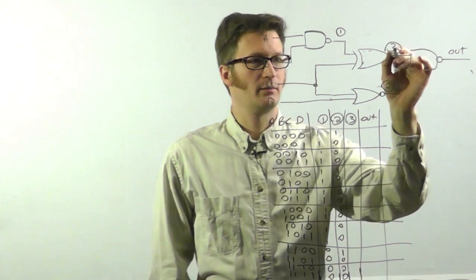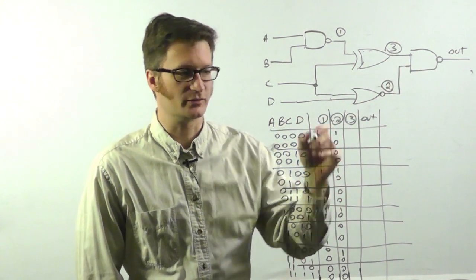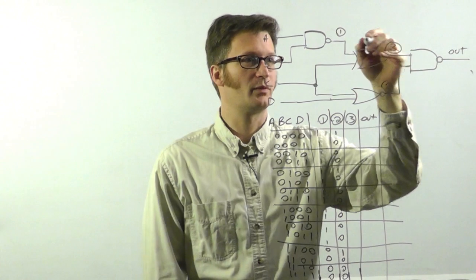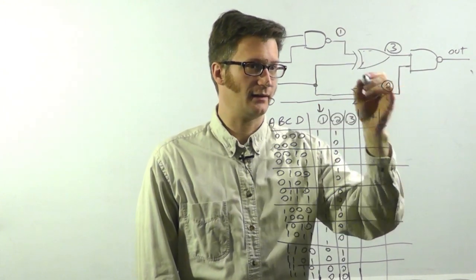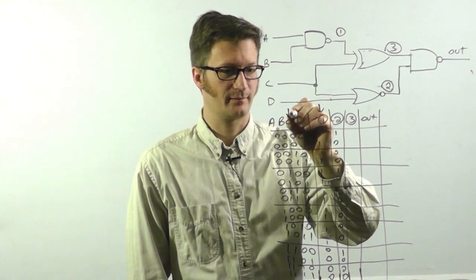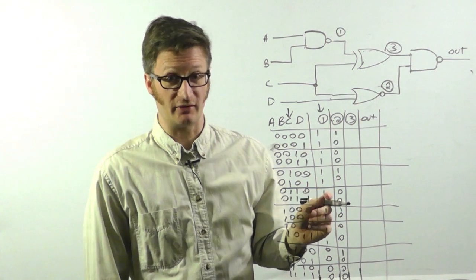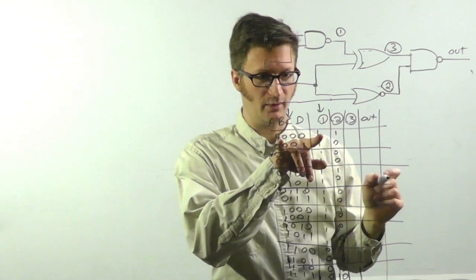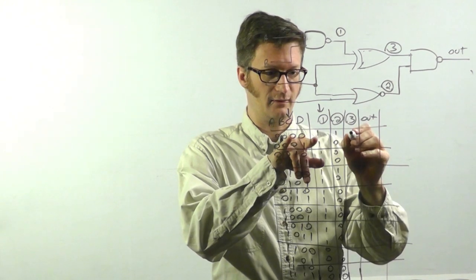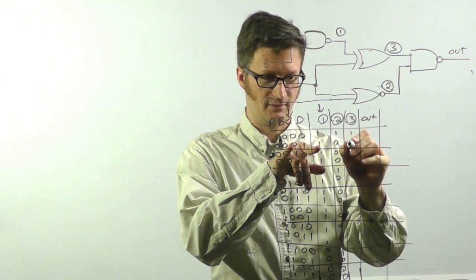All right. Looking at point three, now it becomes a little bit more helpful to draw little arrows over here. Point three, we're looking at point one and at C. And it is an exclusive or so if the two bits are different, the output will be high and otherwise it'll be low. So they're different, different.